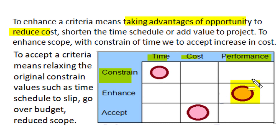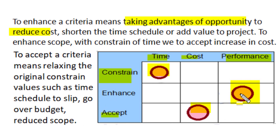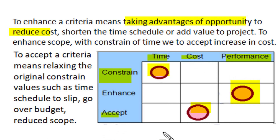When we need to enhance scope or performance within a constrained time, we must improve project specification and add value to performance, which requires increasing cost — so the cost criteria must be accepted. Accepting a criteria means relaxing the original constraint values imposed at the time of planning. When time is accepted, the schedule can slip and take more time than planned. When cost is accepted, the project can go over budget. When performance is accepted, the project will reduce scope.